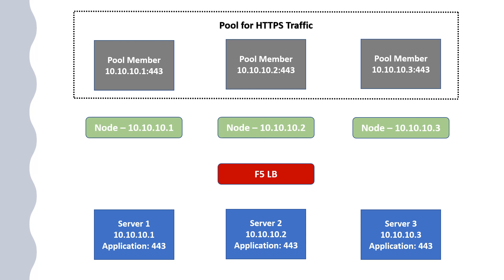In this example, we have a pool for HTTP traffic. The pool comprises pool members, and we have nodes which are essentially IP addresses on these servers. We have our F5 load balancer doing the load balancing for these servers. It's important to note that these servers are on different private IP addresses behind the load balancer, but they should be hosting the same content. In our example, we are making these servers listen on port 443, so HTTPS traffic will be served by these servers, and the same content will be experienced by all users sending requests.